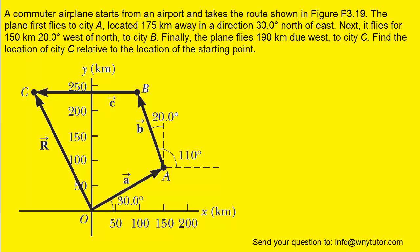If you haven't done so yet, please pause the video now and attempt to do the question before listening on. In this question, we are essentially being asked to find the resultant, which is the sum of the three vectors labeled A, B, and C. The key to solving this question is to break vectors A, B, and C into their X and Y components.